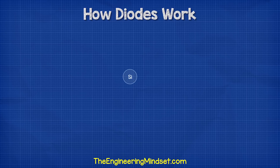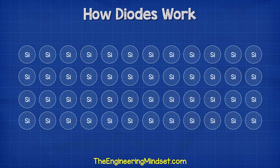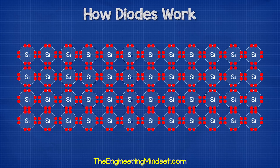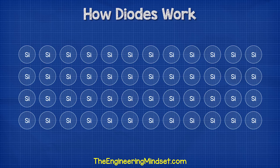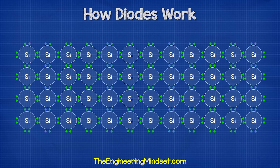Let's imagine the material hasn't been doped yet, so it's just pure silicon inside. Each silicon atom is surrounded by four other silicon atoms. Each atom wants eight electrons in its valence shell, but the silicon atoms only have four electrons in their valence shell. So they share an electron with their neighboring atom to get the eight they desire. This is known as covalent bonding.